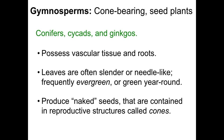Gymnosperms are what we would call cone-bearing seed plants. These are your conifers — like pine trees and fir trees — as well as cycads and ginkgos. Gymnosperms possess true vascular tissue with roots. Their leaves are often slender or needle-like, which is an adaptation to protect them from cold weather. As a result, many gymnosperms are what we call evergreens, meaning they retain their green color year-round and generally do not lose their leaves in the fall. Gymnosperms produce what we call naked seeds, contained in a reproductive structure called a cone — classically, a pine cone.